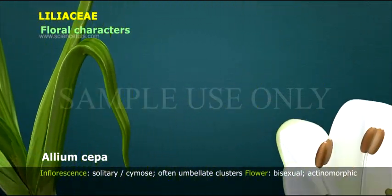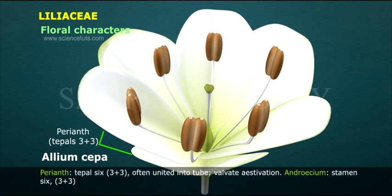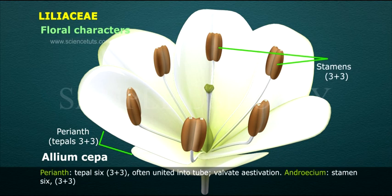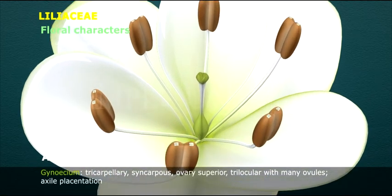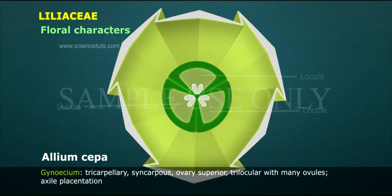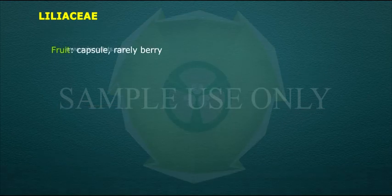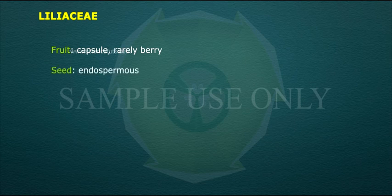Flower bisexual, actinomorphic. Perianth 6 (3+3), often united into a tube, valvate aestivation. Androecium: stamens 6 (3+3). Gynoecium: tricarpellary, syncarpous. Ovary superior, trilocular with many ovules. Axile placentation. Fruit: capsule, rarely berry. Seed: endospermic.